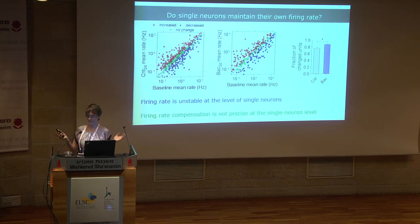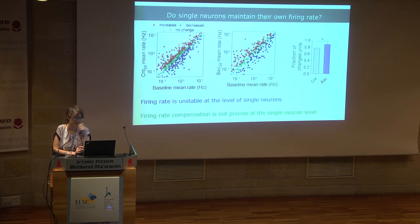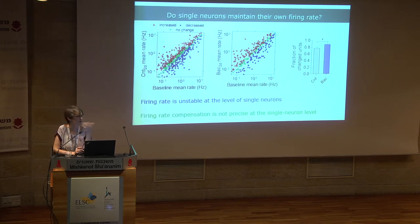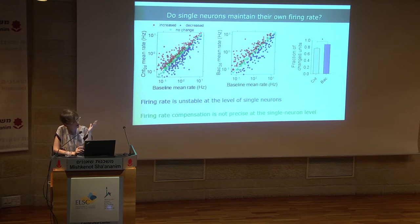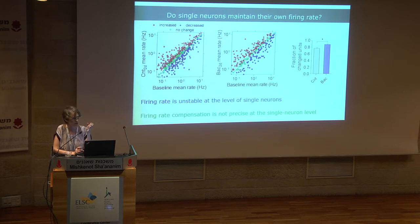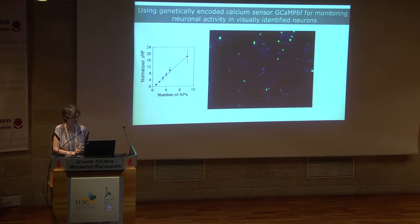Because everyone recording extracellularly knows that the analysis is based on spike-sorting algorithms to separate neurons into single units — and we try to prove we are okay but it is never absolute proof — we decided to go in another direction and use calcium imaging with GCaMP6, which is really working beautifully.